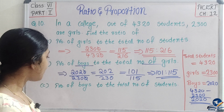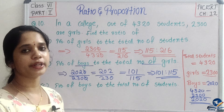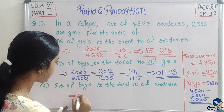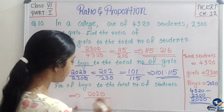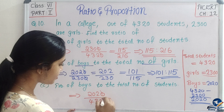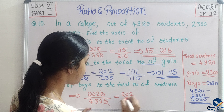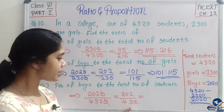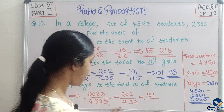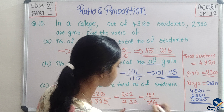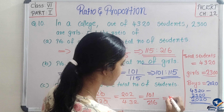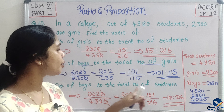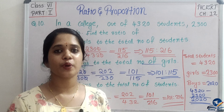Next, number of boys to total number of students: boys = 2,020 divided by total = 4,320. Cancel zeros: 202 divided by 432. Divide by 2: 101 divided by 216. So the ratio of boys to total students is 101 is to 216.